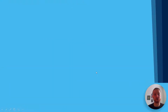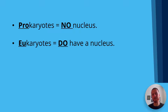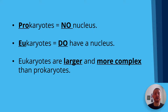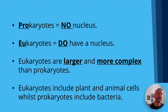Let's go through a summary. For prokaryotes, I always tell my students: 'pro' means 'no' — so prokaryotes have no nucleus. Eukaryotes do have a nucleus, and eukaryotes are larger and more complex than prokaryotes. So use that tip to help you get the top marks in your exam. Eukaryotes include plant and animal cells, whilst prokaryotes just include bacteria.